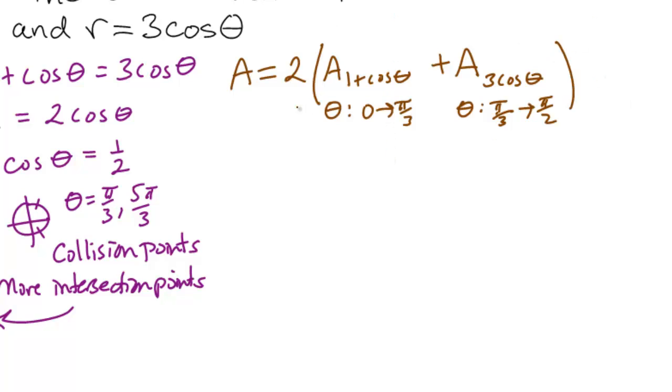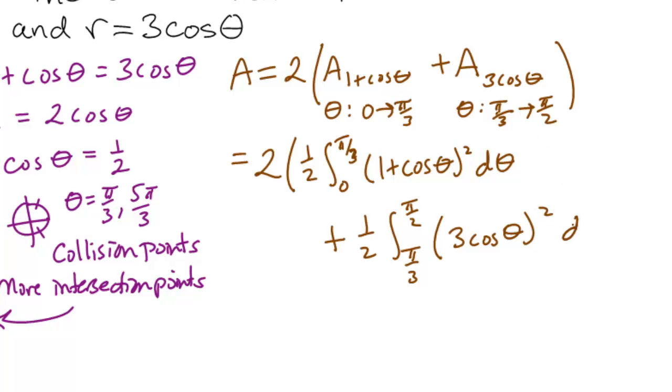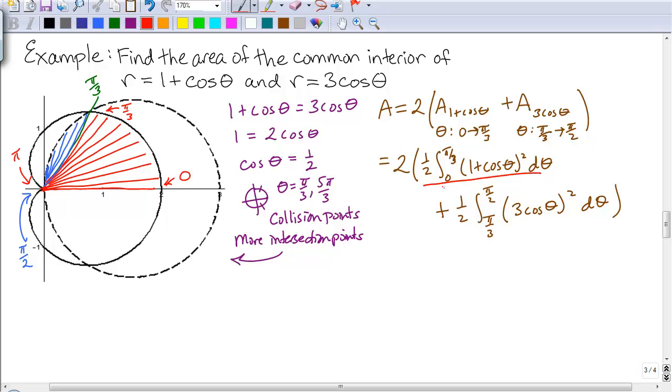So it's important to make notes of what the plan is going to be so it's easier to set up the integral and communicate your process. So we have 2 times, again, using our formula, 1 half the integral from alpha to beta, in this case 0 to pi over 3 of f of theta squared d theta. 1 plus cosine of theta squared d theta, plus 1 half the integral from pi over 3 to pi over 2, but now we're switching to the other curve. 3 cosine theta quantity squared d theta. So the first integral represents the area I've illustrated in red. The second integral represents the area I've illustrated in blue.